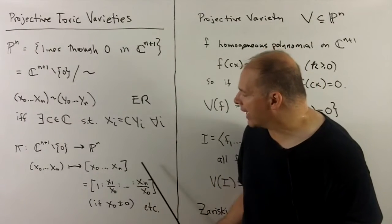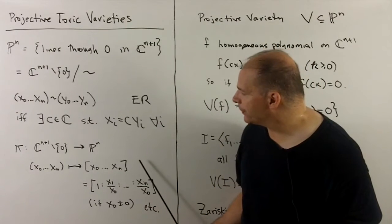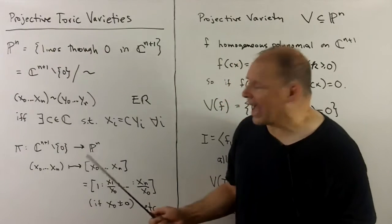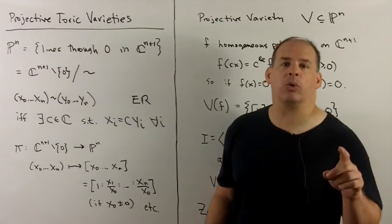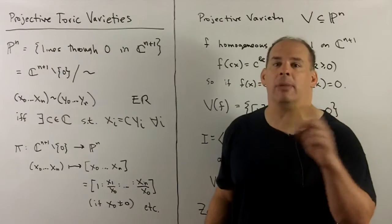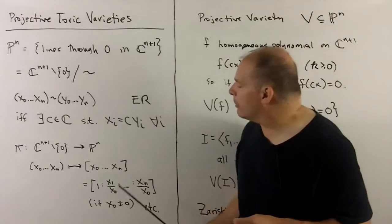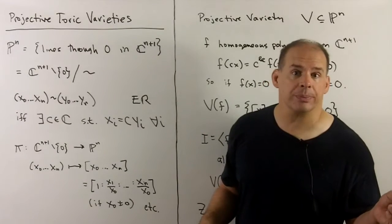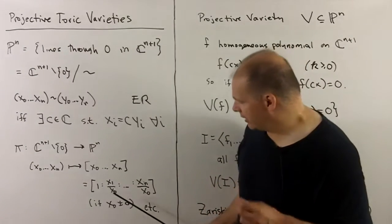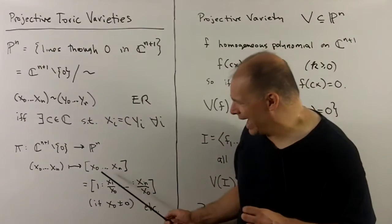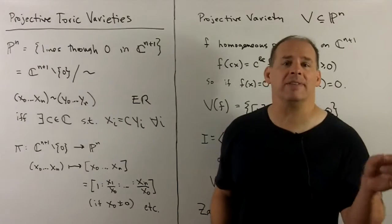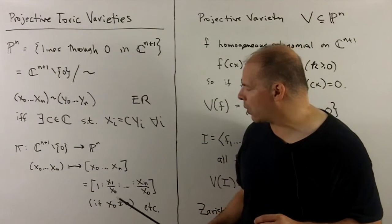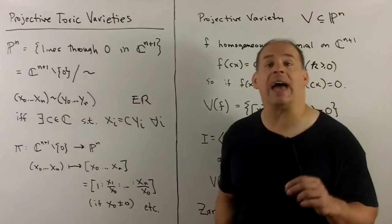We'll denote that with hard brackets. Because we have equivalence classes, we can replace the notation by any other element in the class, which means we can multiply through or divide by non-zero scalars. A useful trick: if we have x_0 non-zero, we can divide through by x_0, which forces a 1 in the first coordinate. We'll need that later.